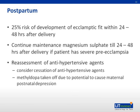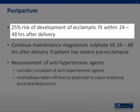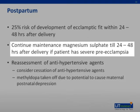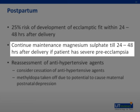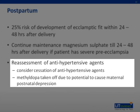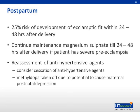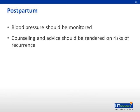The postpartum period is an often neglected but equally crucial component of hypertensive disorders in pregnancy. There is a 25% risk of development of an eclamptic fit within 24 to 48 hours after delivery. Intravenous magnesium sulfate should be continued until 24 to 48 hours after delivery if a patient has severe preeclampsia. The antihypertensive regime should be reassessed after delivery and titrated down or tailed off if possible. Methyldopa should be switched to other agents due to the potential to cause maternal postnatal depression. Upon discharge, the patient should be reviewed within a week for monitoring of blood pressure, and counseling and advice should be rendered about the risks of recurrence in subsequent pregnancies.